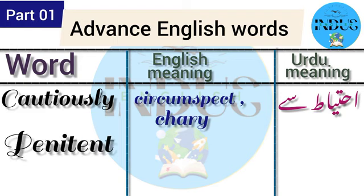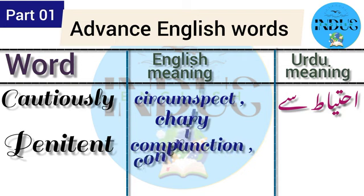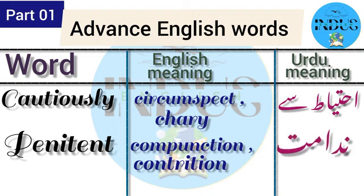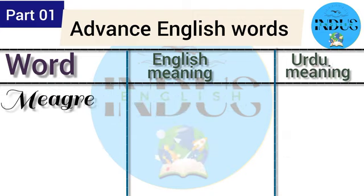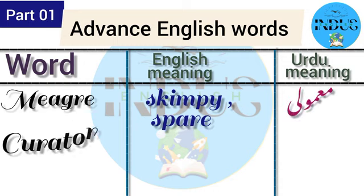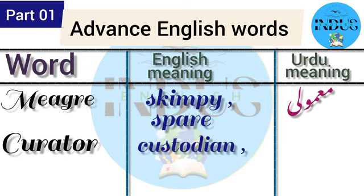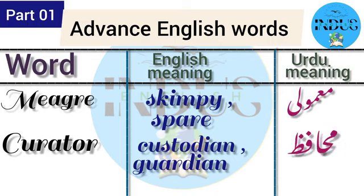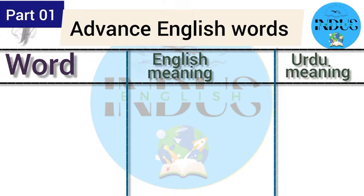'Penitent' means compunction or contrition. In Urdu, it means nadamath. 'Meager' means skimpy or spare. In Urdu, it means mamuli. 'Curator' means custodian or guardian. In Urdu, it means mohafiz.